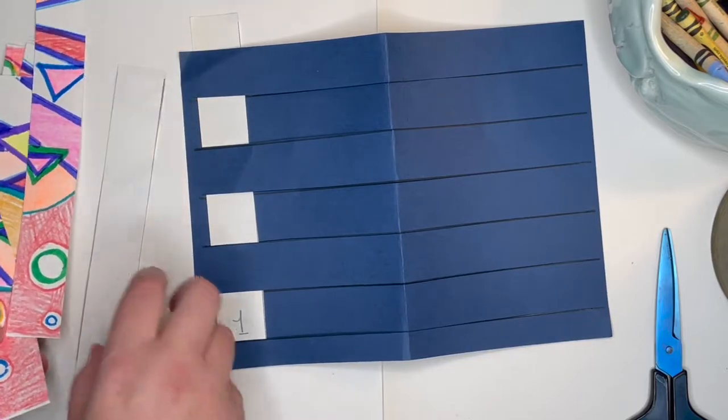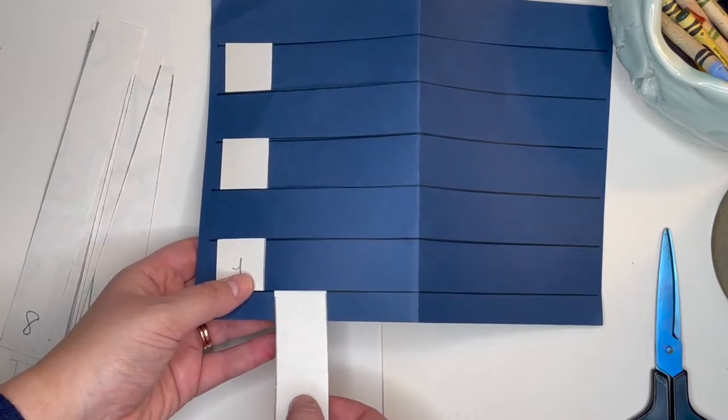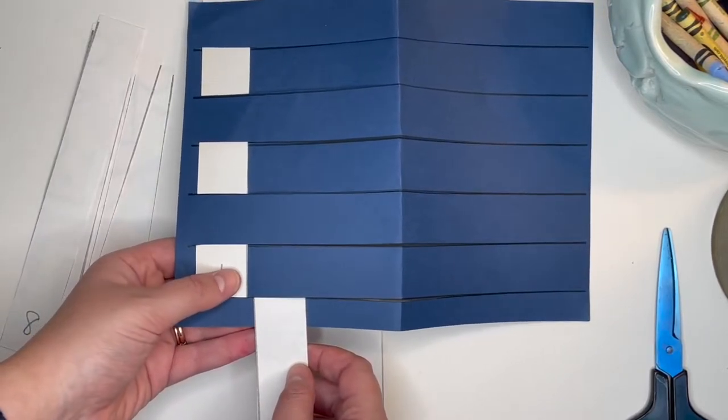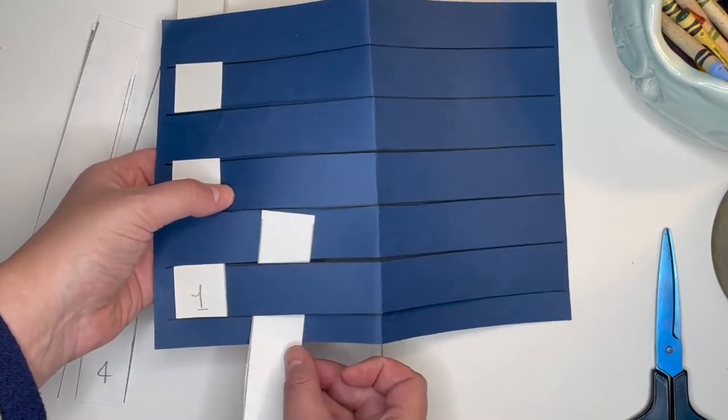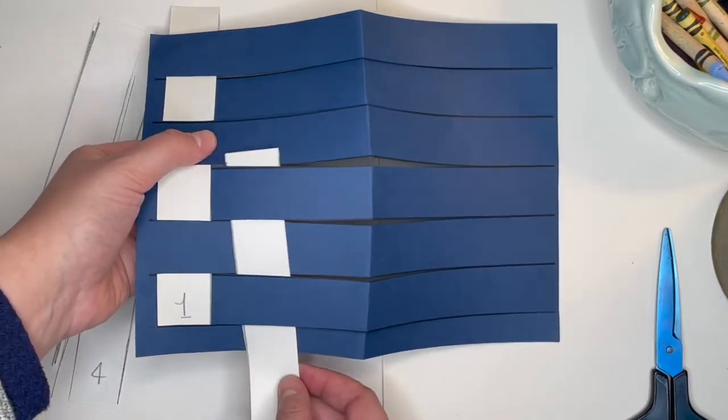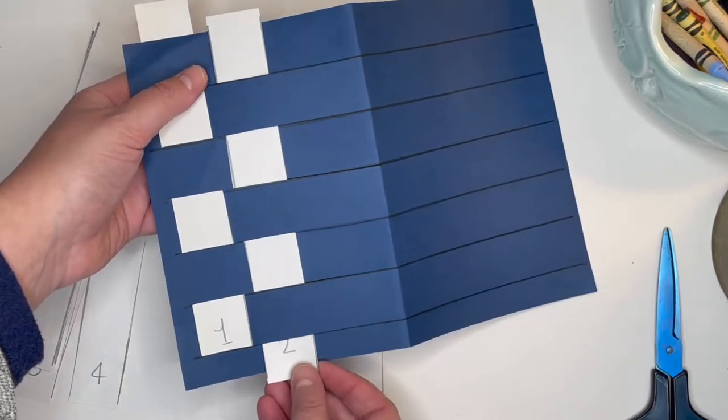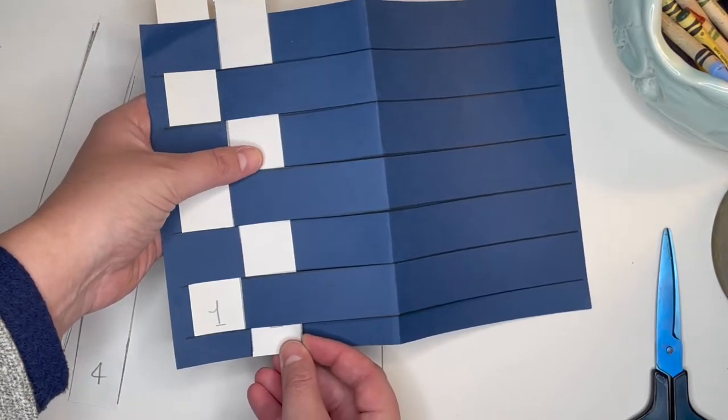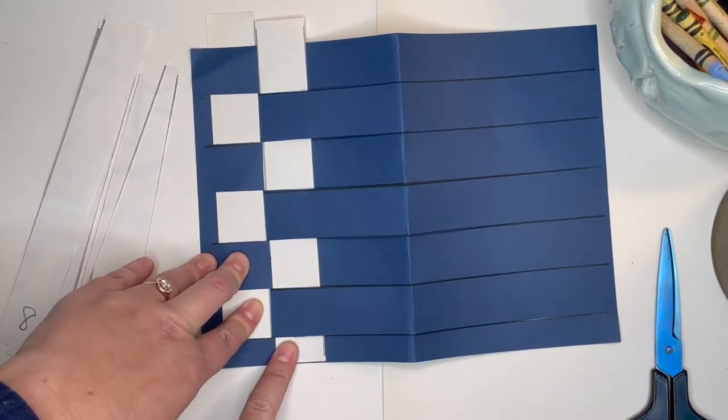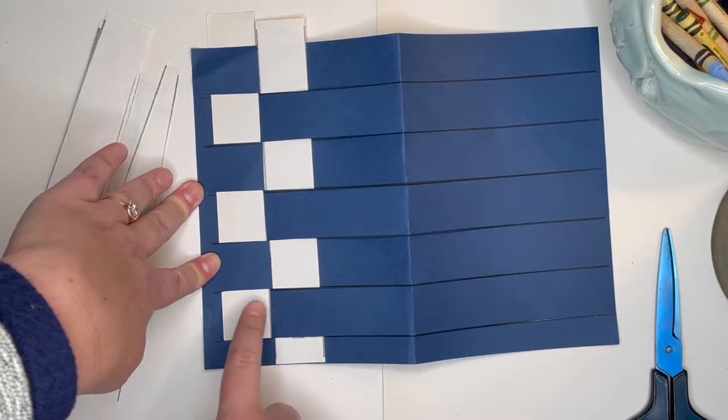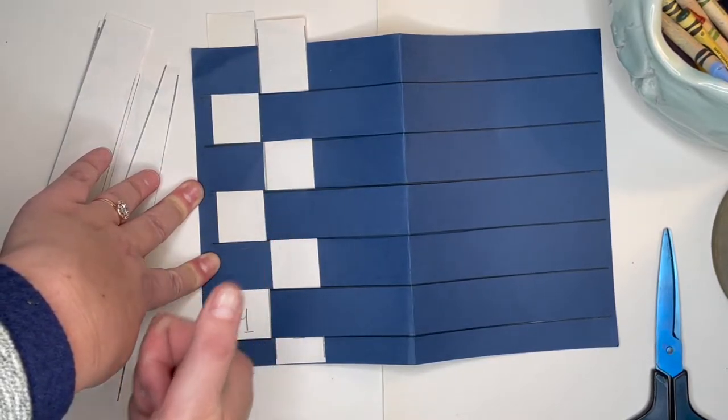Let's start with number two next. Okay this time though we are going to make our paper start under the paper that has the number. This is going to create our checkerboard pattern or an AB pattern. Let it set next to each other. As long as you see every other one as the paper, you have done it right.